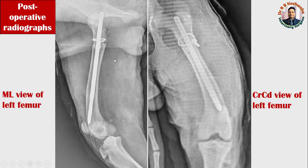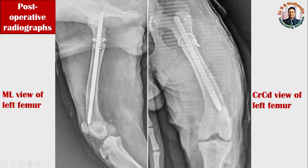This is the image immediately after performing the intramedullary pinning of the fractured bone. This is the post-operative radiograph — this one is the mediolateral view of the left femur and this is the craniocaudal view of the left femur. If you see the alignment of the femur bone, by the anatomy we can say the reduction was very good and the proximal and distal fracture fragments are now almost in alignment.